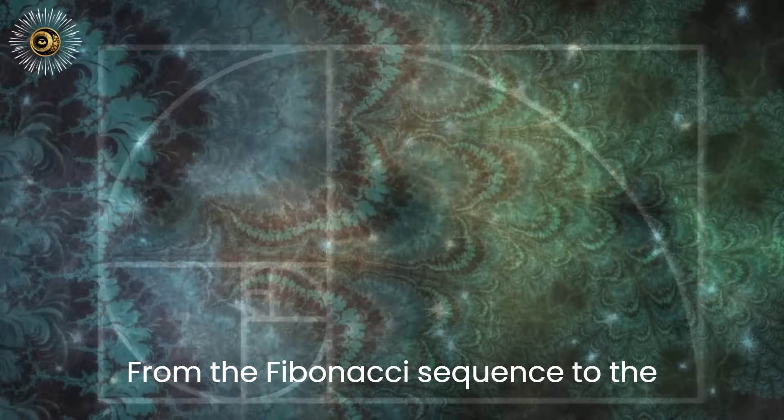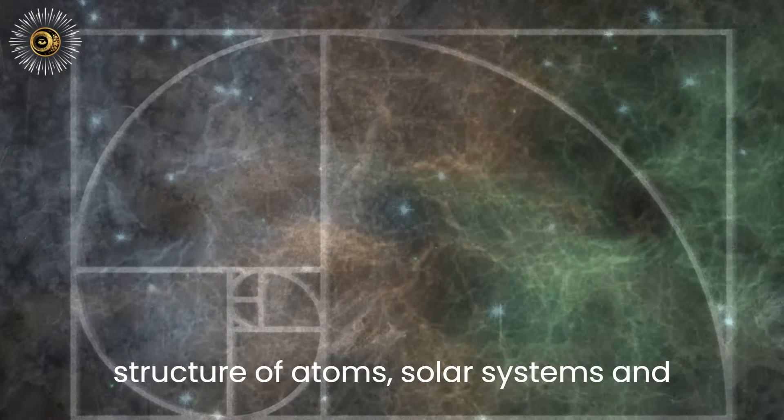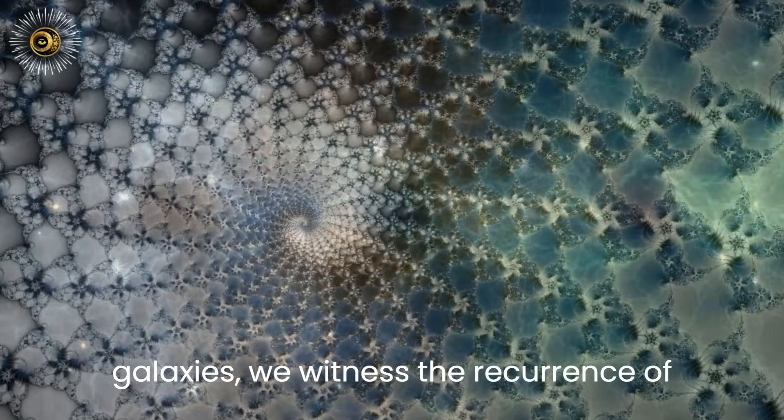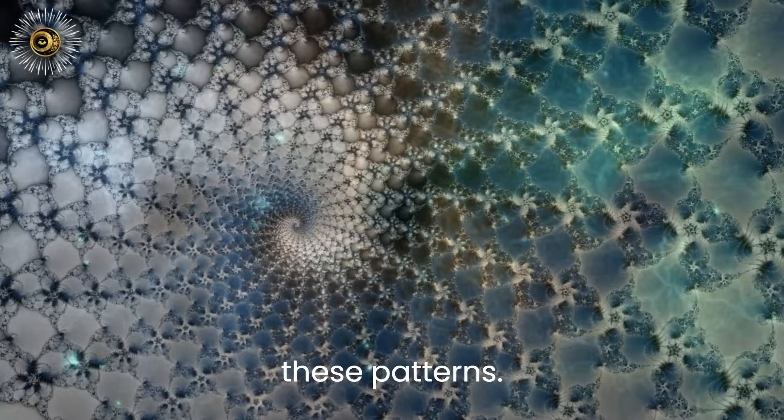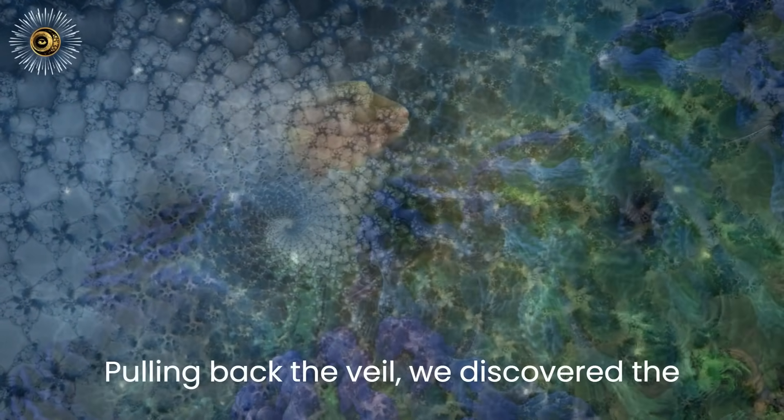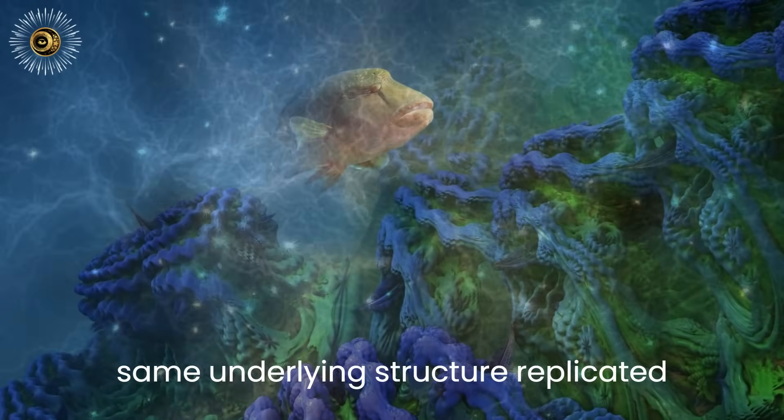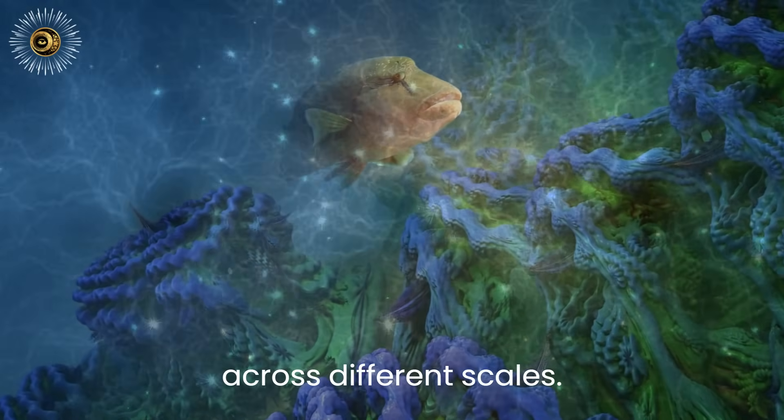From the Fibonacci sequence to the structure of atoms, solar systems, and galaxies, we witness the recurrence of these patterns. Pulling back the veil, we discover the same underlying structure replicated across different scales.